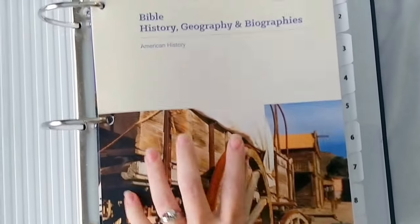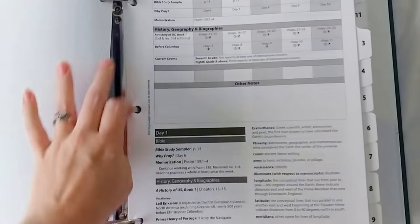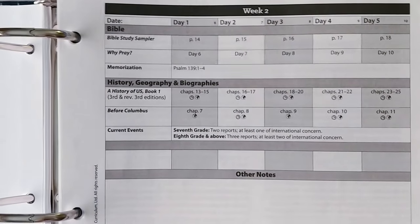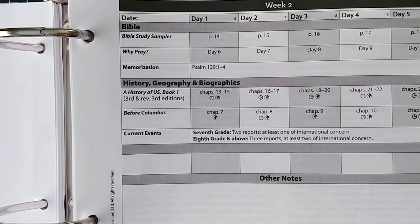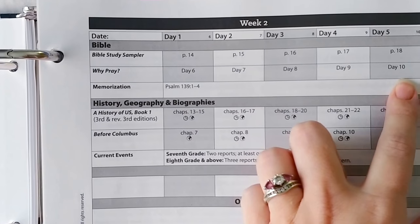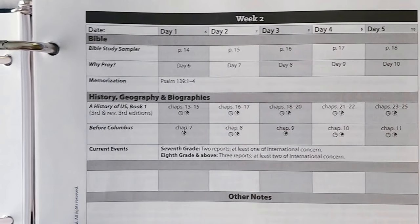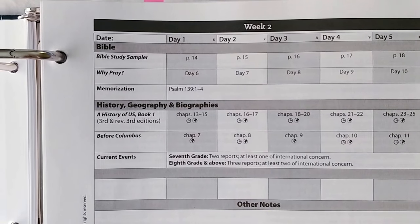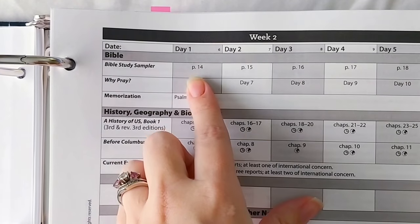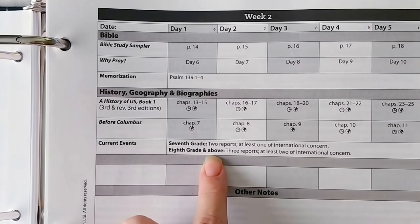Let's open up to week two. Every single thing is laid out for you — these are the lesson plans you will need for each week. Your entire year is laid out for you. This is Bible, history, geography, and biographies, so you've got day one, day two, day three, day four, day five. Sunlight gives you the option of a four-day schedule; I chose a five-day schedule this year. It is so simple — if you start school on a Monday, this is day one, week two, and this is what your child will be doing for Bible, history, geography, and current events.